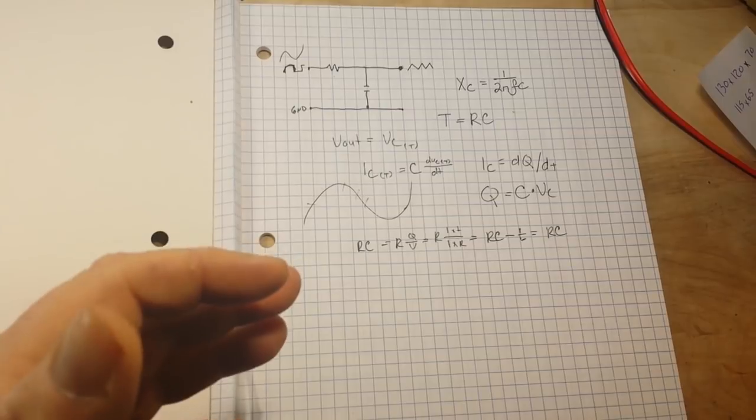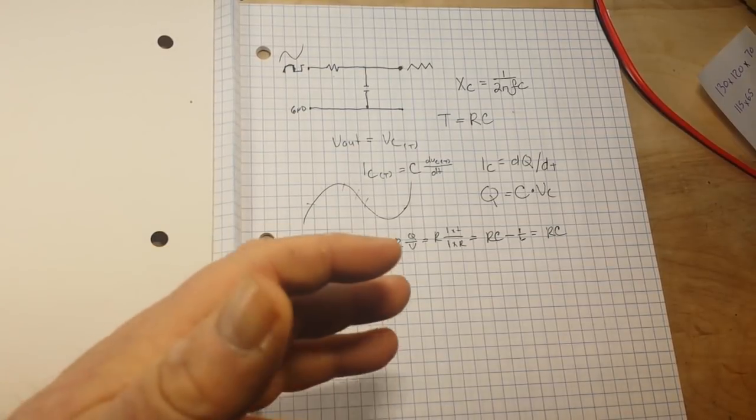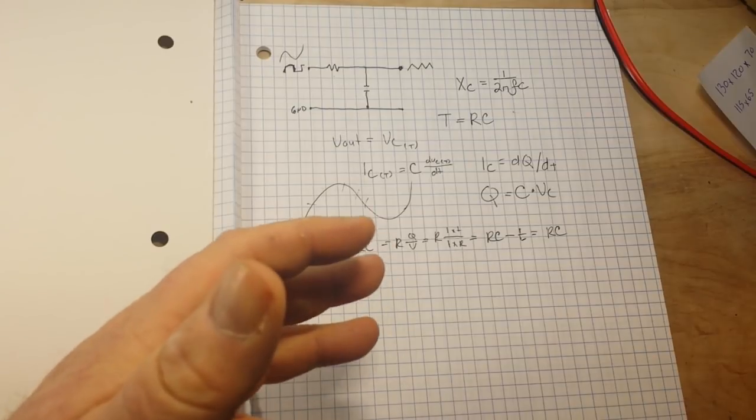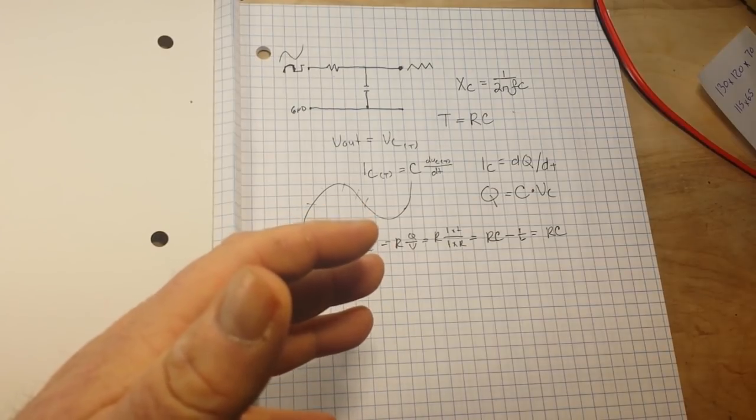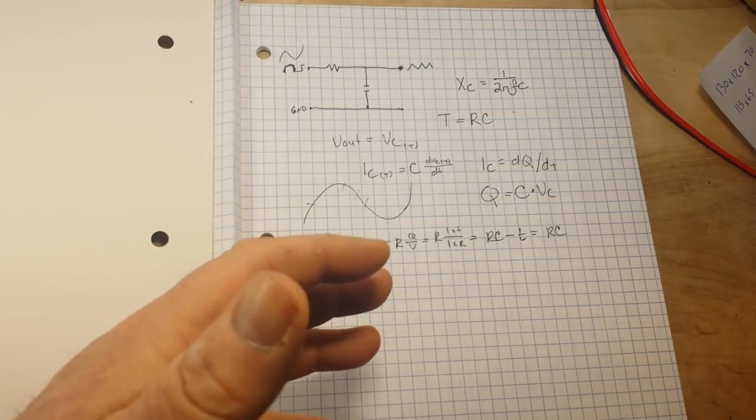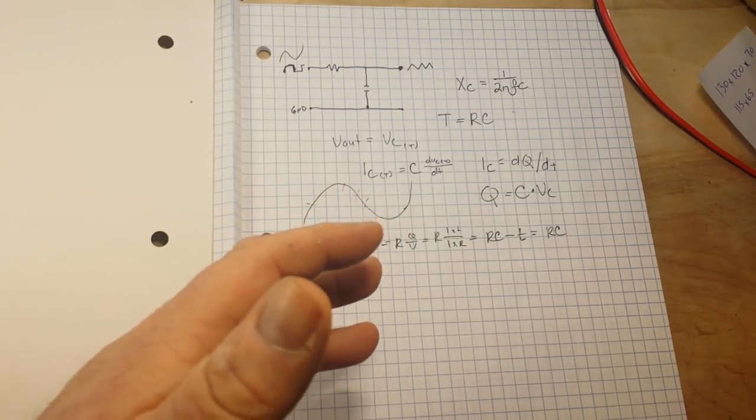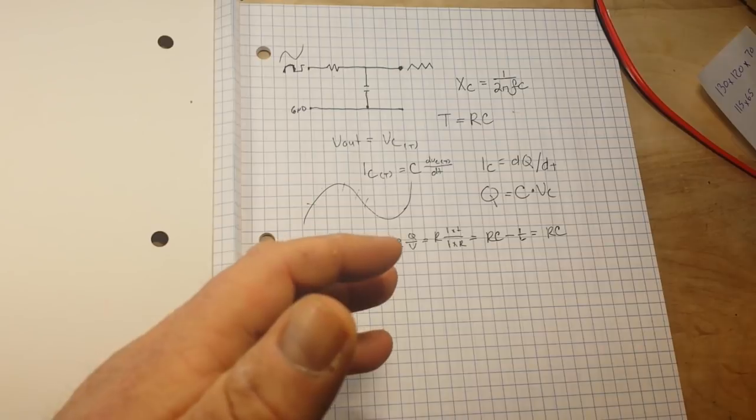Okay now, we saw above that the capacitor's current can be expressed as a rate of change, that's q, with respect to time. So a basic rule of differential calculus is the derivative of q, our charge, in respect to time, is dq over dt.